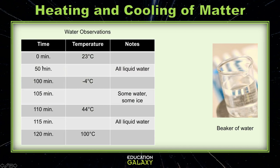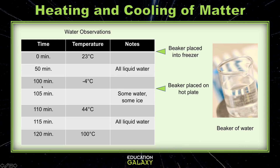At the very beginning of our experiment, at zero minutes, we place the beaker of water into the freezer. After 100 minutes, we'll take the beaker out of the freezer and place it on a hot plate. You can see that some of the temperatures and the notes are filled in, but some are missing. So let's fill in the missing data together based on what we just learned about the heating and cooling of matter.